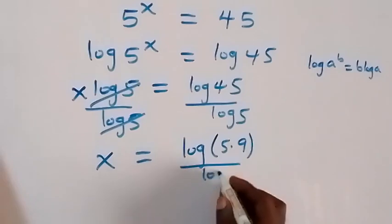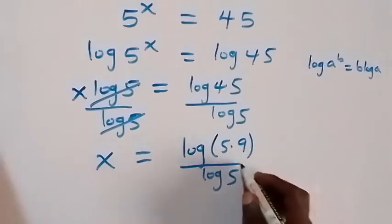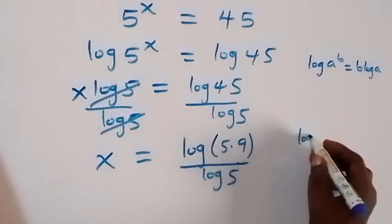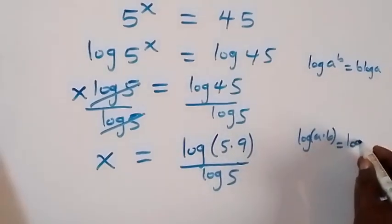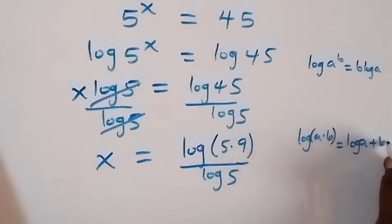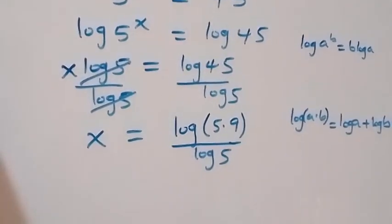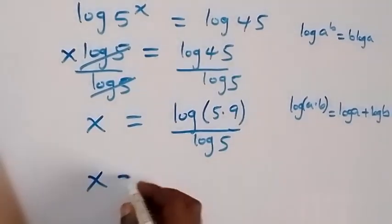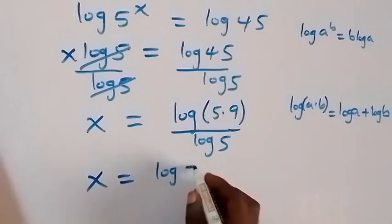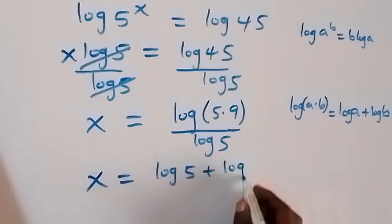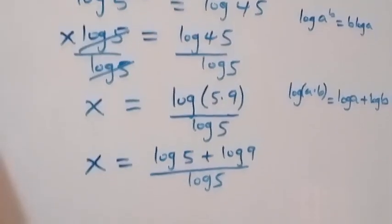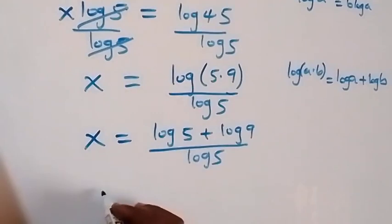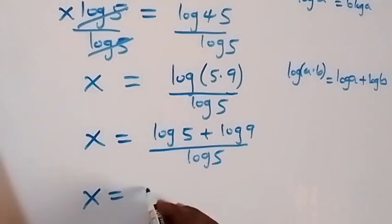From the law of logarithms, log(a times b) is the same as log a plus log b. Applying this, x equals log 5 plus log 9, all over log 5. We can then separate this fraction into two fractions: x equals log 5 over log 5 plus log 9 over log 5.